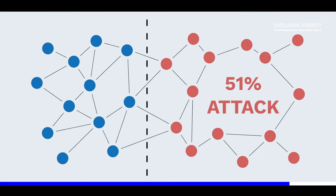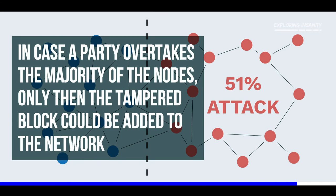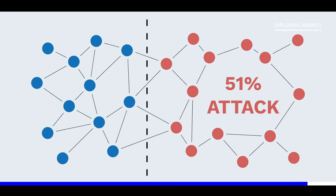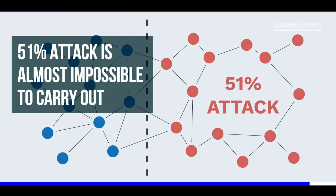Now, there is a possibility of a 51% attack, in which a party can take over the majority of the peer-to-peer network and change the data across the nodes. Only then would this tampered block become accepted by everyone else. But this is also almost impossible to do.